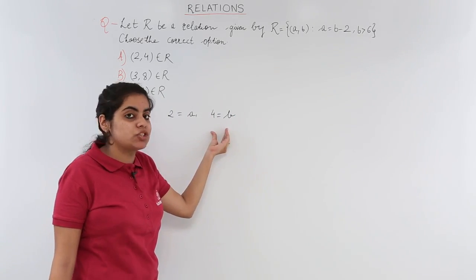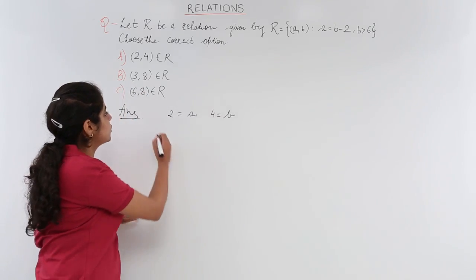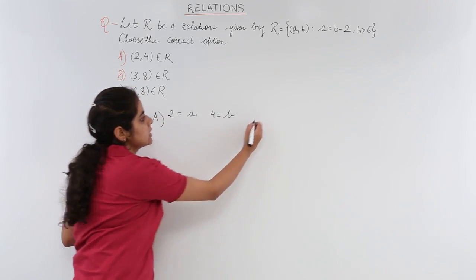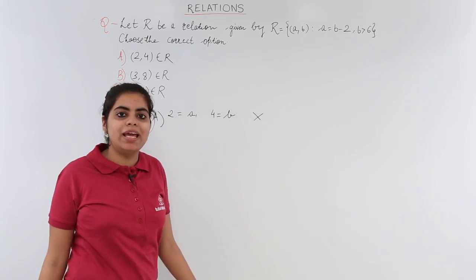But b should always be greater than 6, which the question says, but here b is 4, which is not greater than 6. Hence option A is incorrect.